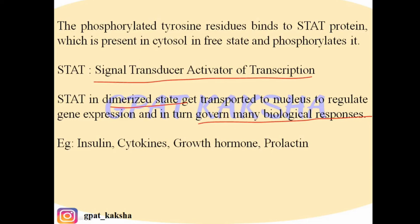Examples of these types of JAK-STAT kinase binding receptors include insulin, cytokines, growth hormone, and prolactin.